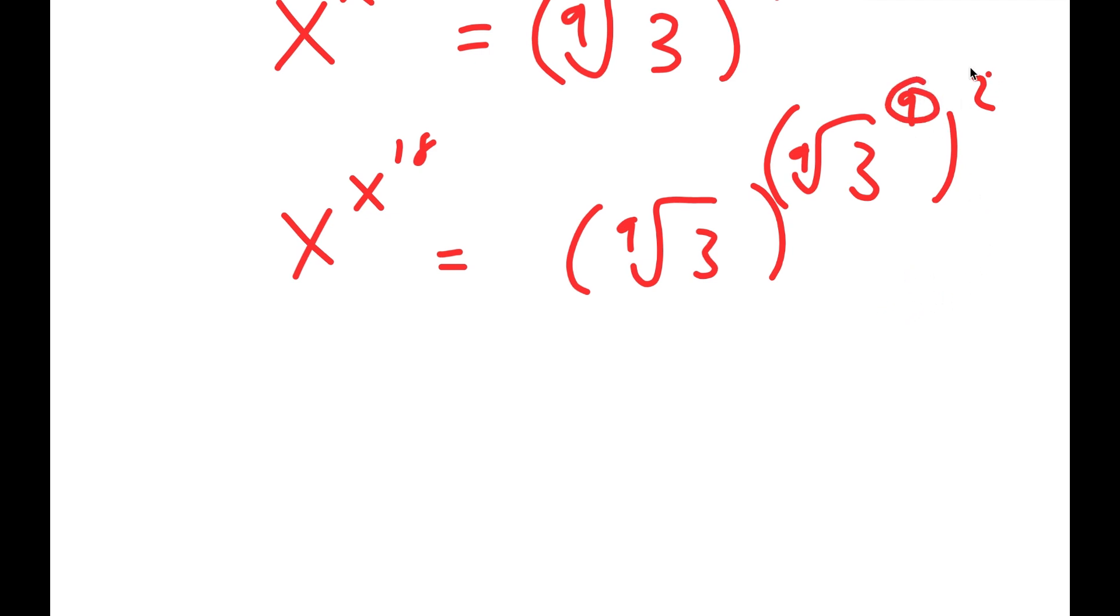So now from here, I'm going to multiply these two because a to the power of m to the power of n is equal to a to the power of m times n.